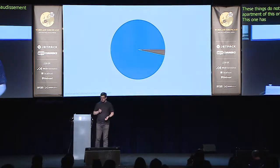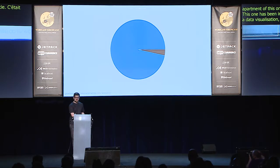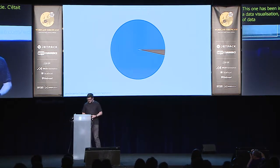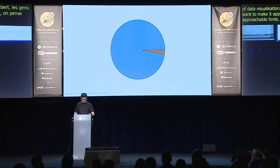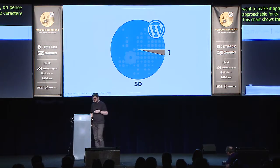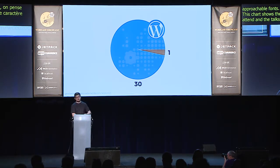This one's been incredible. I figured I'd start off with a data visualization — because pie charts are kind of like the Comic Sans of data visualization. People love to use them but designers think it's awful. I want to make data-vis approachable, though, and Comic Sans and Papyrus are often noted as approachable fonts, so I thought perhaps it would be a good chart to start with. This chart shows the talks at WordCamp Europe that I wanted to attend in blue, and in red the only talk I would have liked to skip — my own — because I would love to be across the way at Michael's. But thank you all for coming to mine.